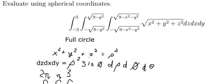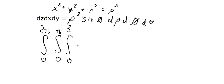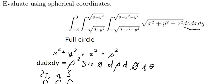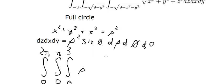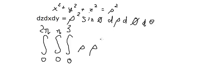The square root, we have the rho in here, so you got rho. And dz dx dy, we change for rho square sine phi d rho d phi d theta.